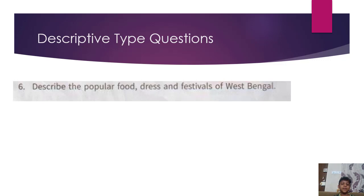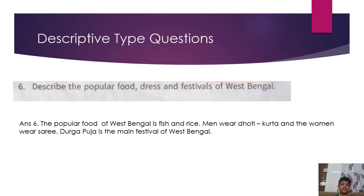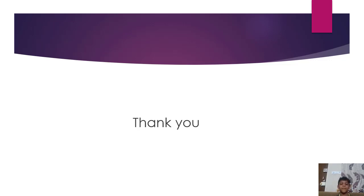Describe the popular food, dress and festivals of West Bengal. Answer: The popular food of West Bengal is fish and rice. Men wear dhoti and kurta, and the women wear sari. Durga Puja is the main festival of West Bengal. Thank you.